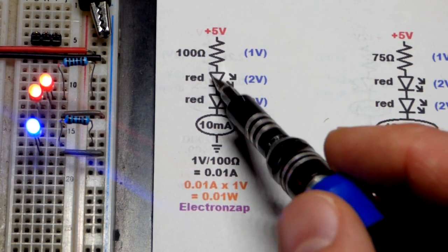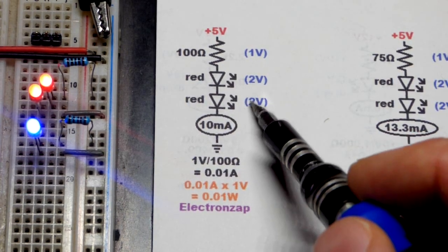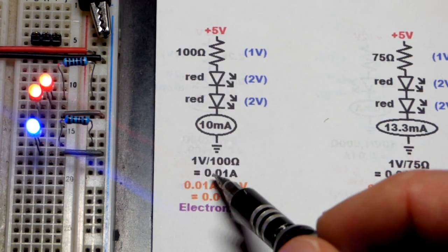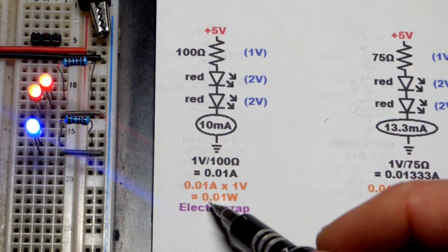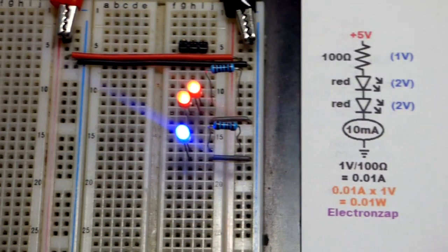But in this case, out of the 5 volts, two series red LEDs—these indicator LEDs—are going to drop 2 volts each, for a total of 4 volts, leaving 1 volt across the 100 ohm resistor. We got 0.01 amps of current, and it's not going to get very warm at all. That's the resistor that we're looking at there.